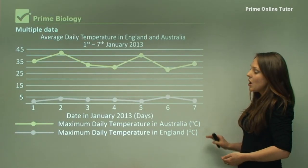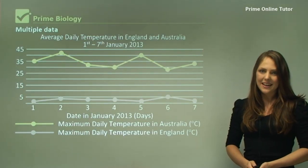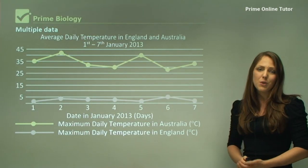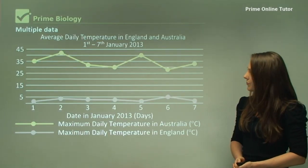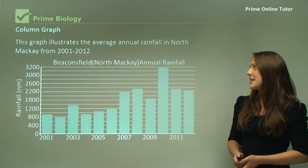This labels what each line represents. I have got here a key in yellow and pink, so yellow is Australia and pink is England. You can see those two different values represented differently on this graph. The column graph represents the average annual rainfall in North McKay from 2001 to 2012.